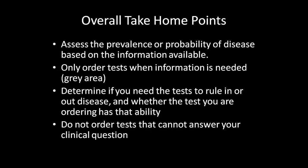Finally, the conclusion from all three talks should be: first, assess the prevalence or probability of disease based on the information you already have. Only order more testing when it will change what you do — when you are in the gray area. Decide what information you want out of your test, whether you want to rule in or rule out the disease, and decide whether the test you are ordering matches that goal. Don't order tests that cannot answer your clinical question — don't order a D-dimer if you want to make sure somebody has a PE, because it's not confirmatory. It's only useful to rule out.